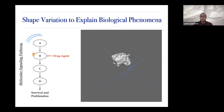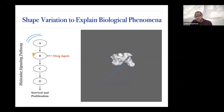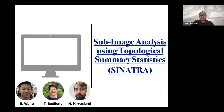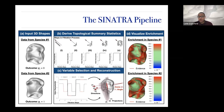That past study suggested that if we can predict with Euler characteristics, it'd be really nice to ask whether there's a connection between what's happening at the molecular scale and whether it manifests via shape. This brought us to this notion of building methods that don't just do predictive things, but actually do variable selection on shapes. This is joint work by Bruce Wang, Tim, and Henry — we've been calling this Sub-Image Analysis using Topological Summary Statistics, or SINATRA for short.